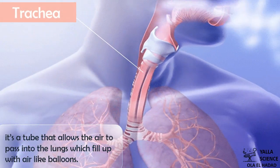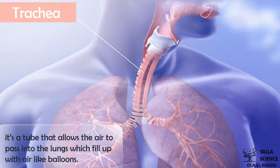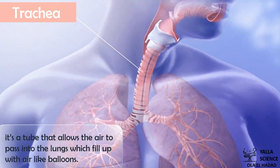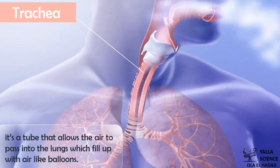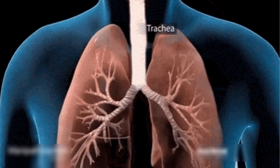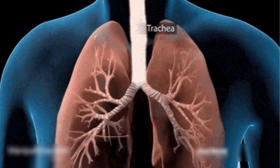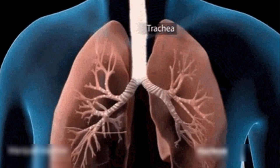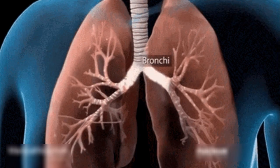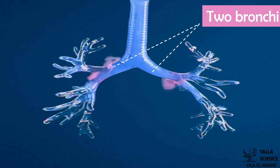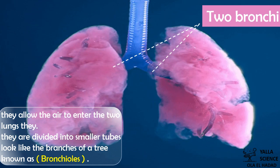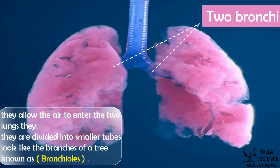The trachea is a tube that allows the air to pass into the lungs, which fill up with air like balloons. Inside the lungs, the trachea is branched into two tubes known as the two bronchi. They allow the air to enter the two lungs.